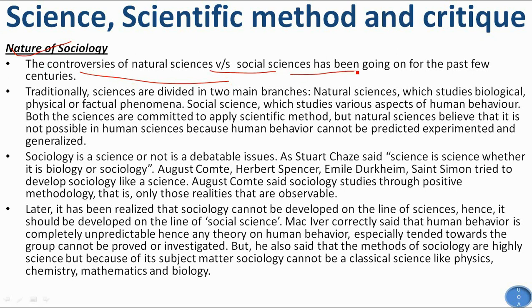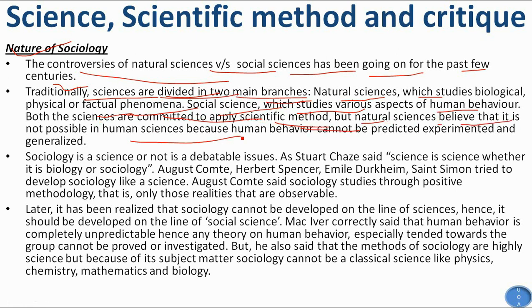There are controversies of natural science versus social science which have been going on for the past few centuries. Traditionally, sciences are divided into two main branches: natural science, which studies biological, physical, or factual phenomena, and social science, which studies various aspects of human behavior. Both are committed to applying scientific method, but natural scientists believe it is not fully possible in human science because human behavior cannot be predicted, experimented upon, and generalized.